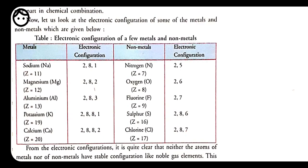Non-metals like nitrogen (atomic number 7, configuration 2, 5) need 3 more electrons to become stable. Oxygen needs 2 electrons, fluorine needs only 1. Because they need fewer electrons to complete their octet, they try to take electrons from metals rather than giving 5, 6, or 7 electrons away. That's why metals and non-metals form bonds by loss or gain of electrons. This bond is called an ionic or electrovalent bond because ions — Na⁺ and Cl⁻ — are formed.